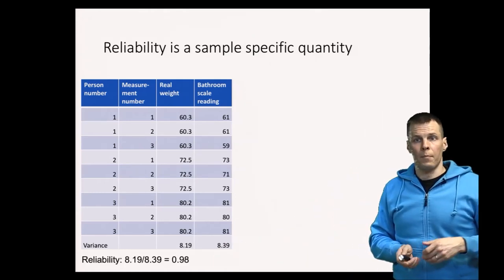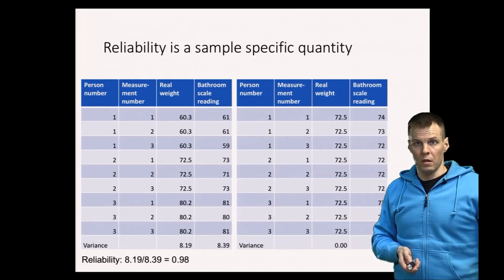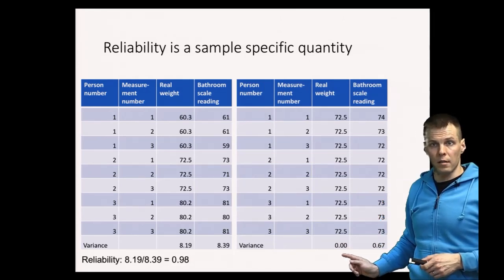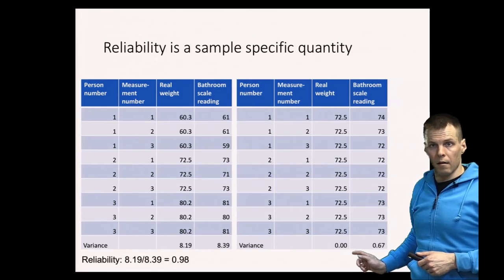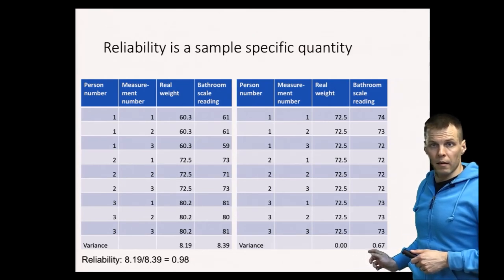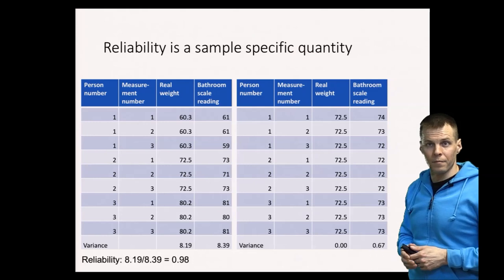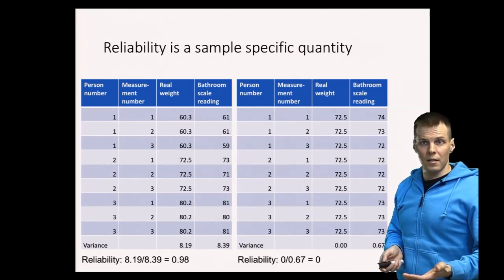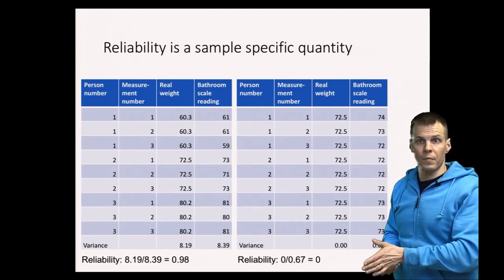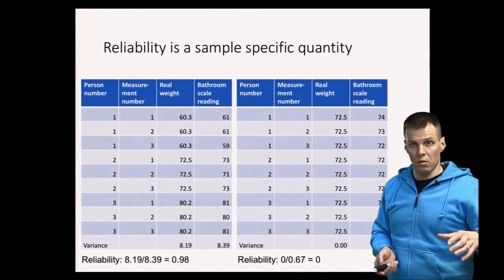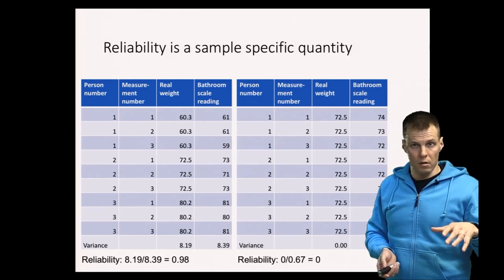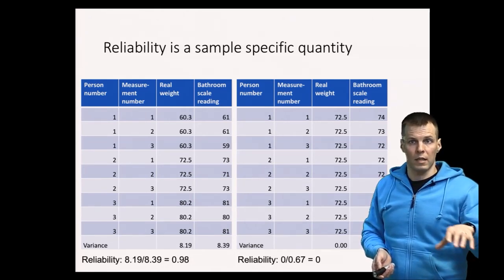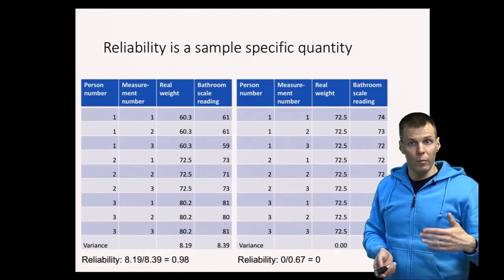What will happen if everybody is the same weight? So if our data are here, the variance of real weight is 0, and our bathroom scale reading varies with the variance of 0.67. Turns out that our reliability is 0 because it's 0 divided by 0.67. So if there is no variation in the population or no variation in the sample, depending on whether you're interested in the population reliability or the sample reliability, then the reliability will be 0.